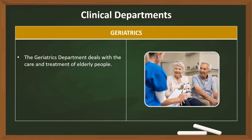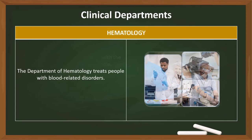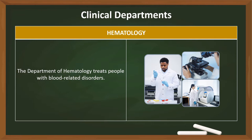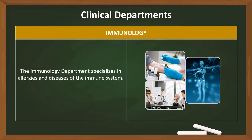The geriatrics department deals with the care and treatment of elderly people. Geriatrics is also known as geriatric medicine. The department of hematology treats people with blood-related disorders. The immunology department specializes in allergies and diseases of the immune system.